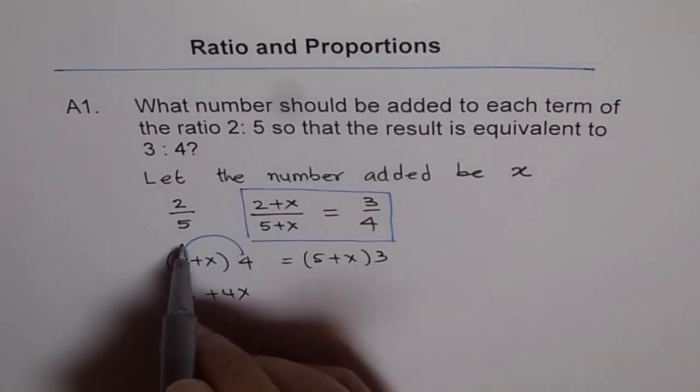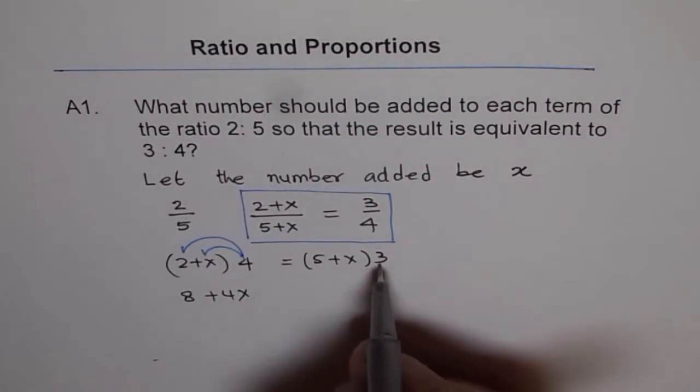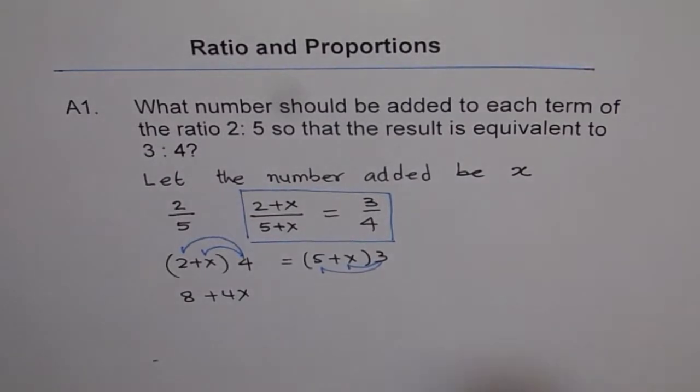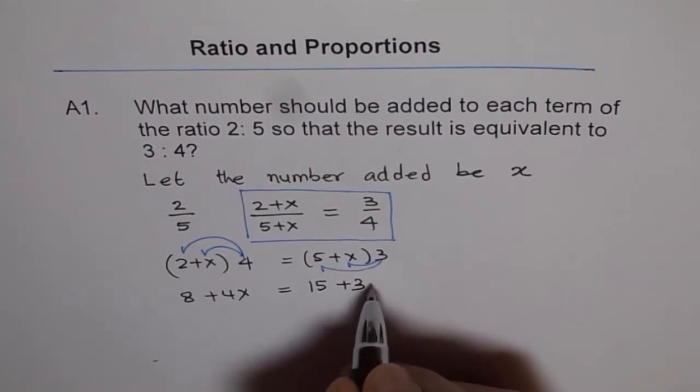So, when you open the bracket, you have to multiply this 4 with both the numbers. I have seen students making a mistake here. Similarly, with 3, you have to multiply with both. So, that this is equal to 5 times 3 is 15 plus 3x.